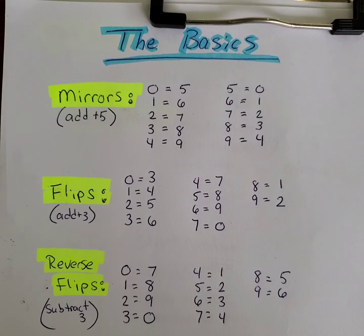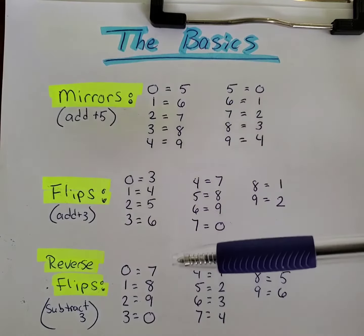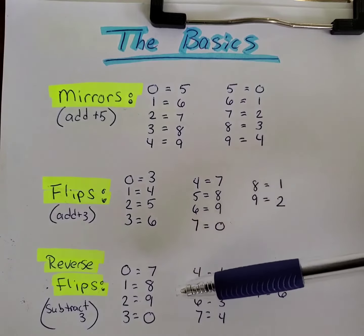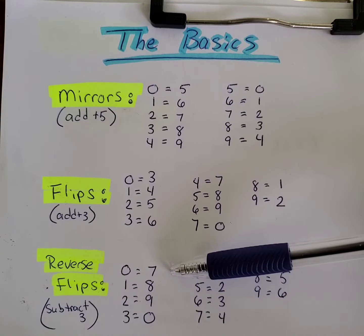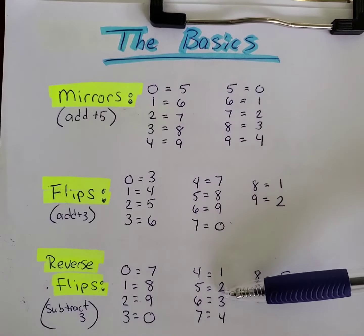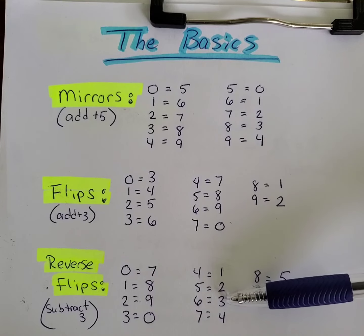A reverse flip is doing exactly the opposite — instead of adding three to it, you're actually going to subtract three. With subtracting three, you take three from ten and it's going to give you seven. If you take three away from twelve, it's going to give you nine. You take three from six, it's going to be a three.